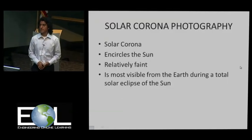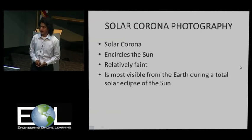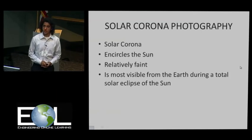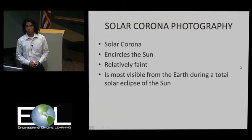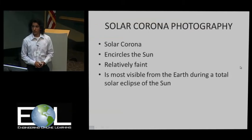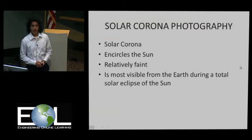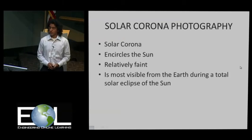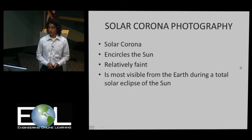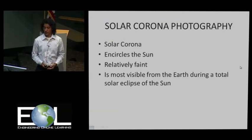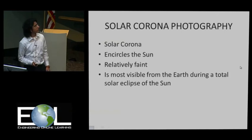The solar corona encircles the sun in its outer atmosphere, and temperatures in this region can reach up to 10 to the power of 6 Kelvin, which is extremely high. This is most visible from Earth during a total solar eclipse — I've got a picture of that coming up.